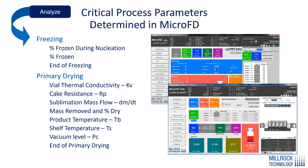In primary drying, we collect critical process parameters including vial heat transfer coefficient, otherwise known as KV; cake resistance, otherwise known as RP; sublimation mass flow; percent dry; product temperature; shelf temperature; vacuum level. We can also determine the end of primary drying. These screens that you see here are dynamically updated during the process continuously.